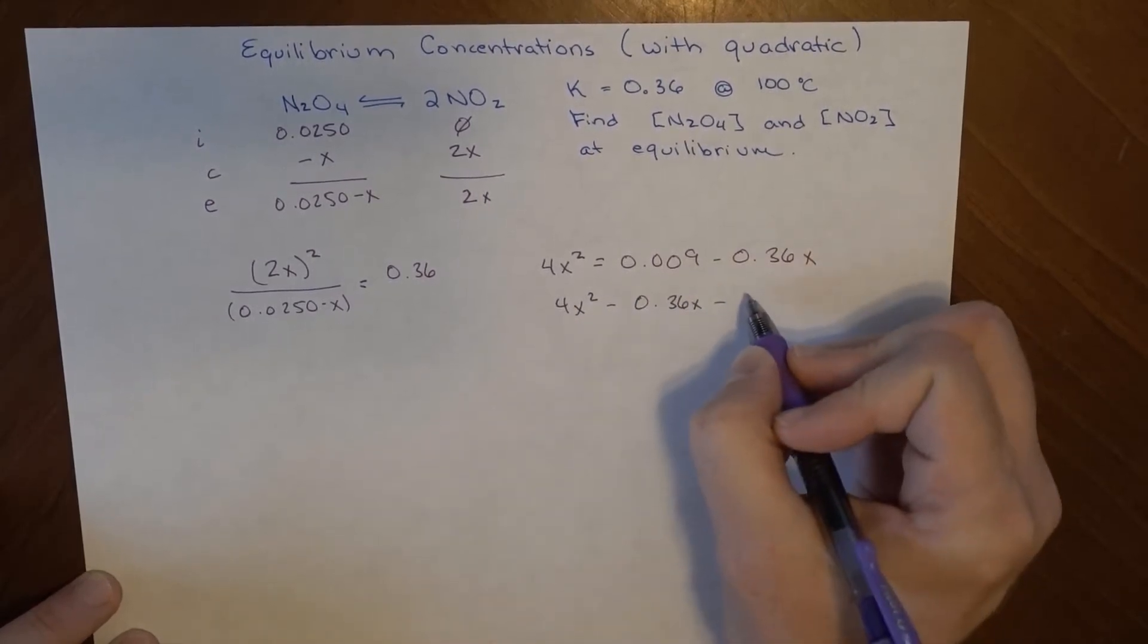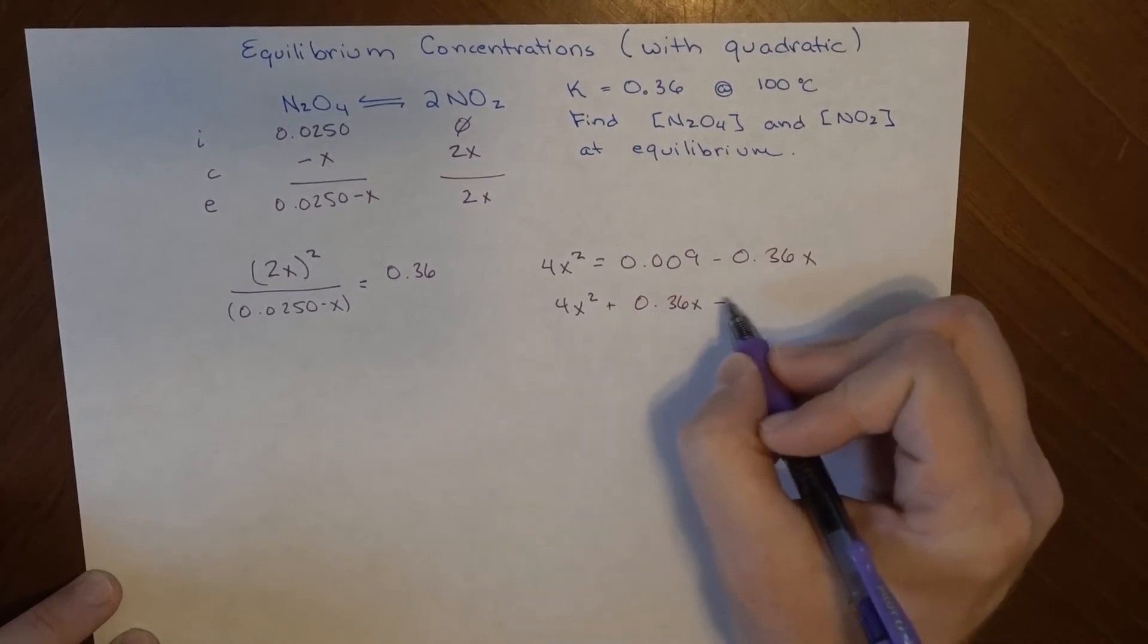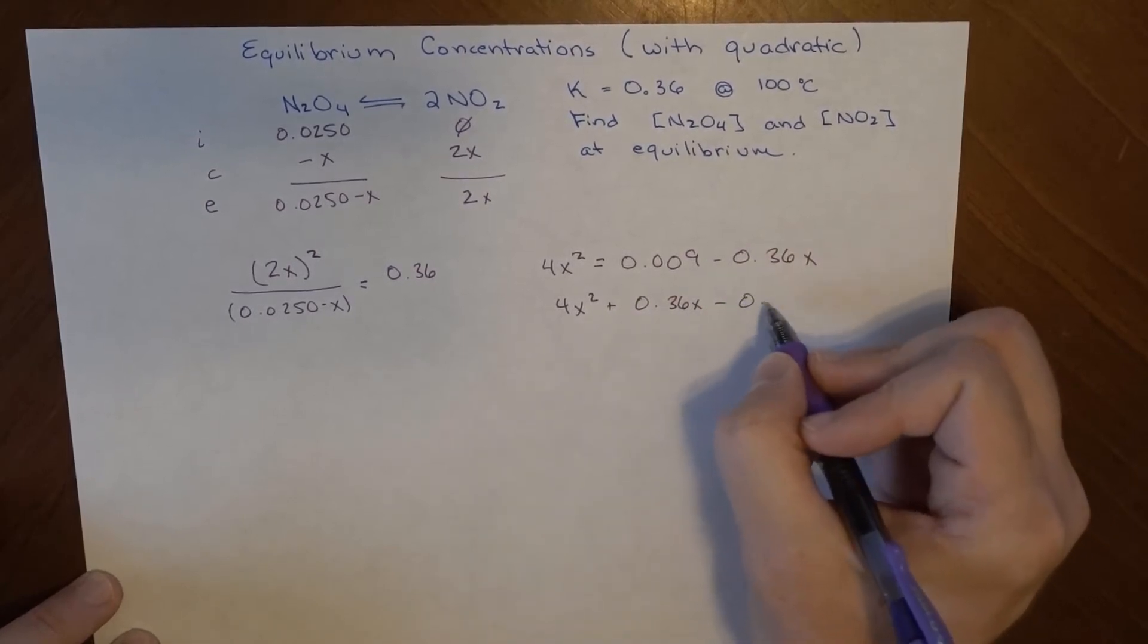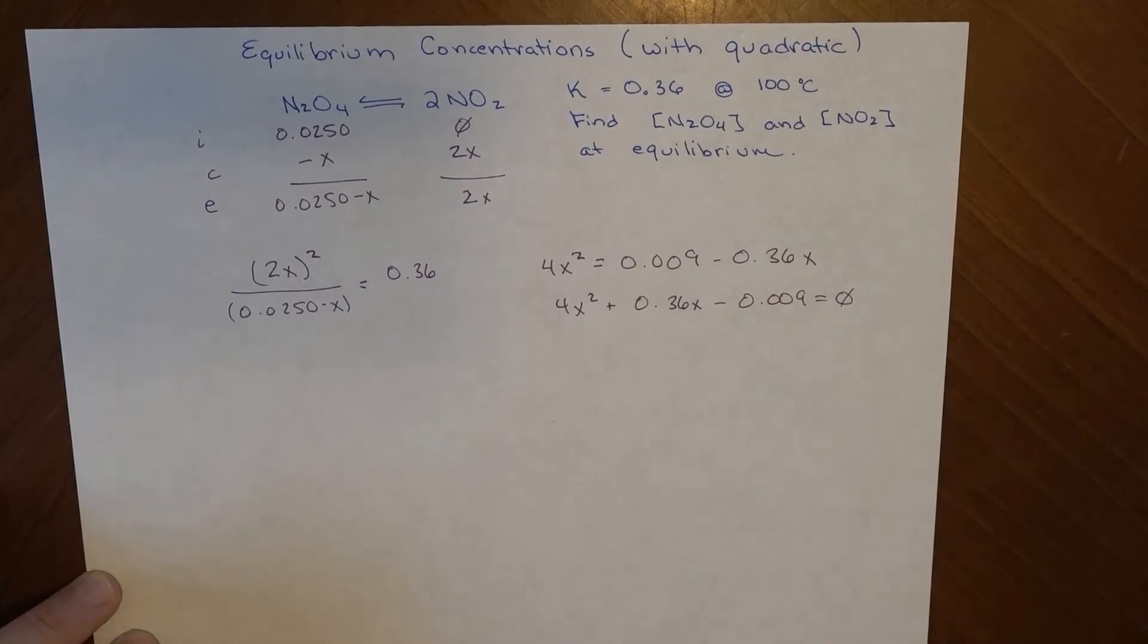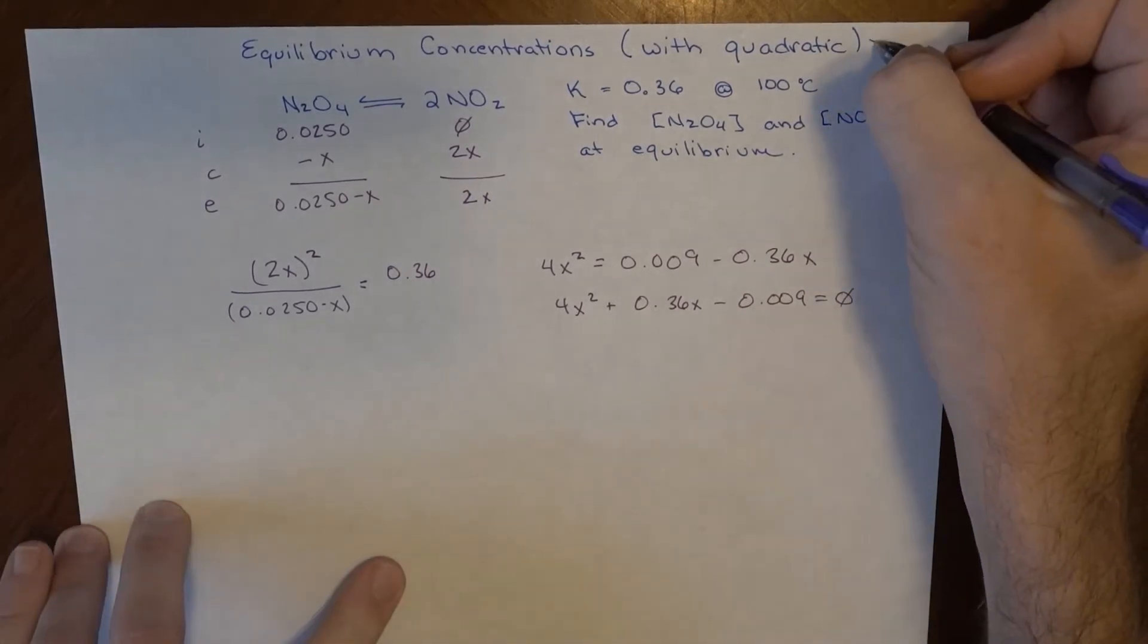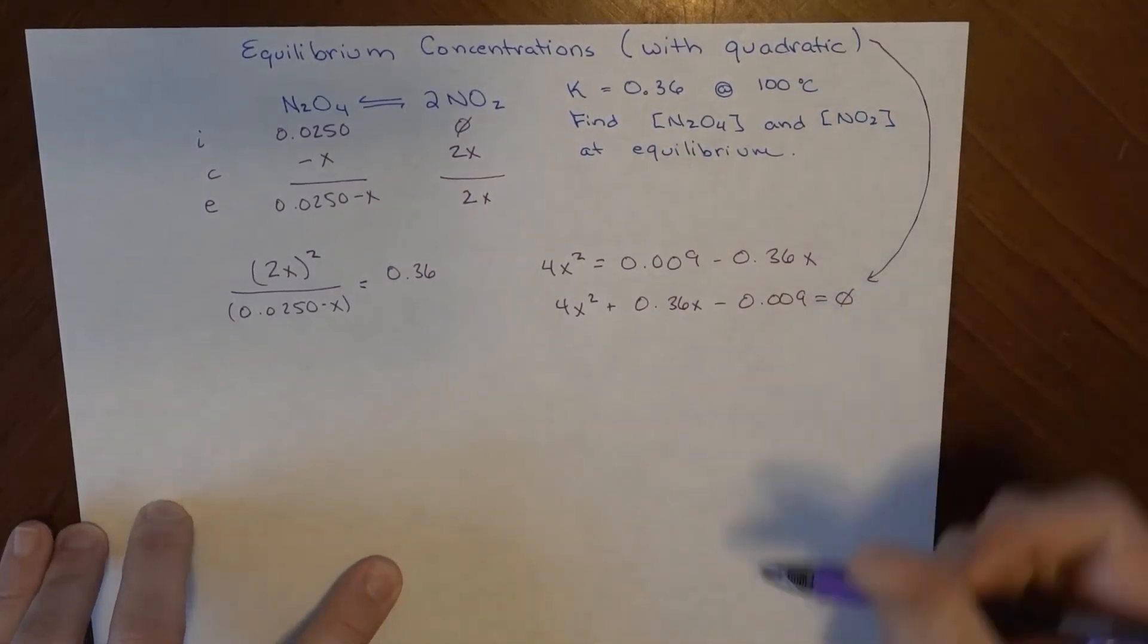0.36x minus, sorry, plus 0.036x. Keep track here, signs. Minus 0.009 equals 0. And this is what I can use to work in the quadratic formula.